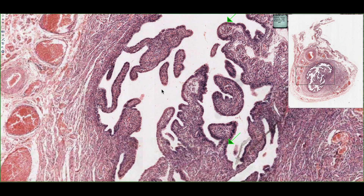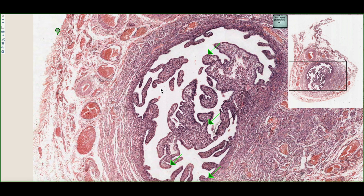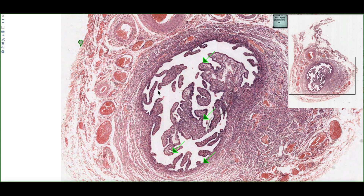In summary, the oviduct has three coverings: a serosa, a muscularis layer with an outer longitudinal and an inner circular layer, and a mucosal lining characterized by large mucosal folds. Essentially, the oviduct acts as a conduit bringing the ova towards the uterus.